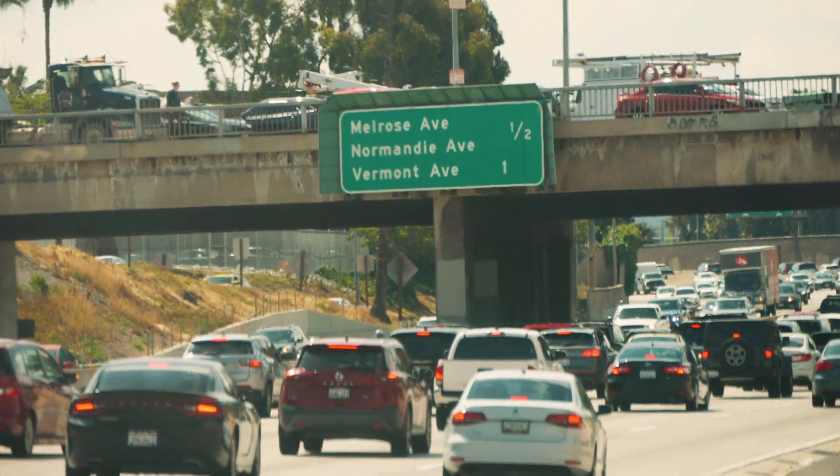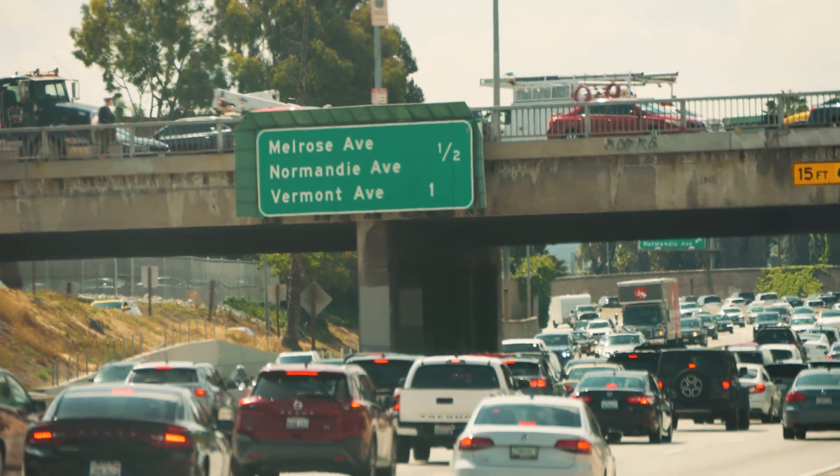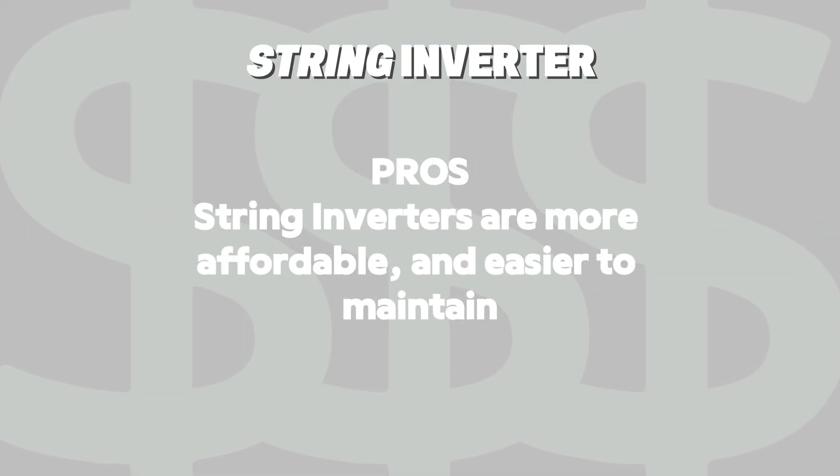Solar panels are wired together in a single lane or string. With a string inverter, if one of those panels underperforms, it will affect the performance of the rest of the panels in that string. Much like rush hour traffic here in LA — when you've got one car that slows down, it slows down all the rest of the cars behind it as well. These types of things can reduce the performance of the system by causing a bottleneck where the rest of the system has to adjust to match the performance of the lowest performing panel. String inverters are lower in cost and can also be easier to maintain because there's only one device that needs to be addressed.